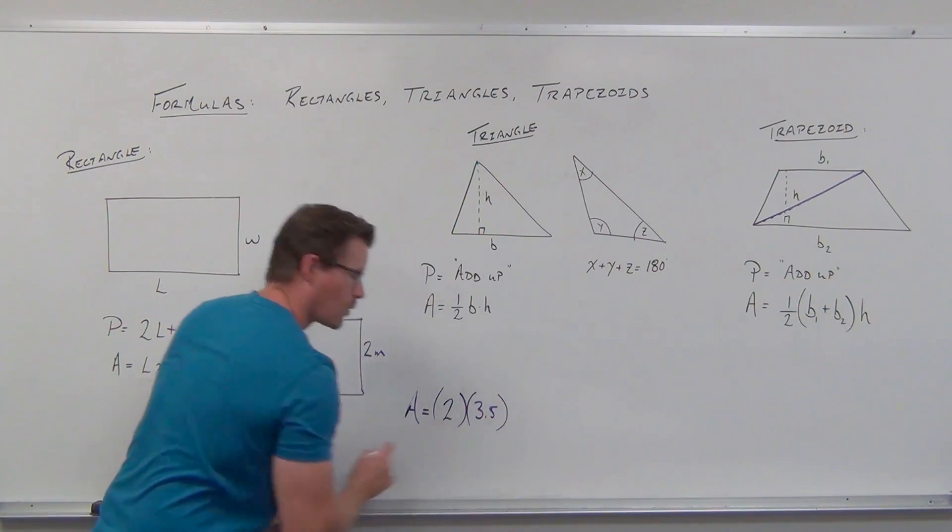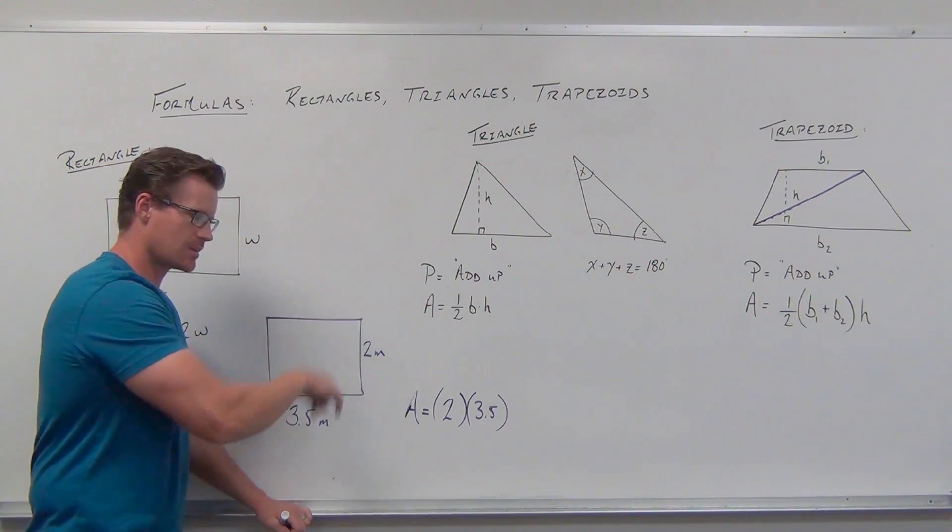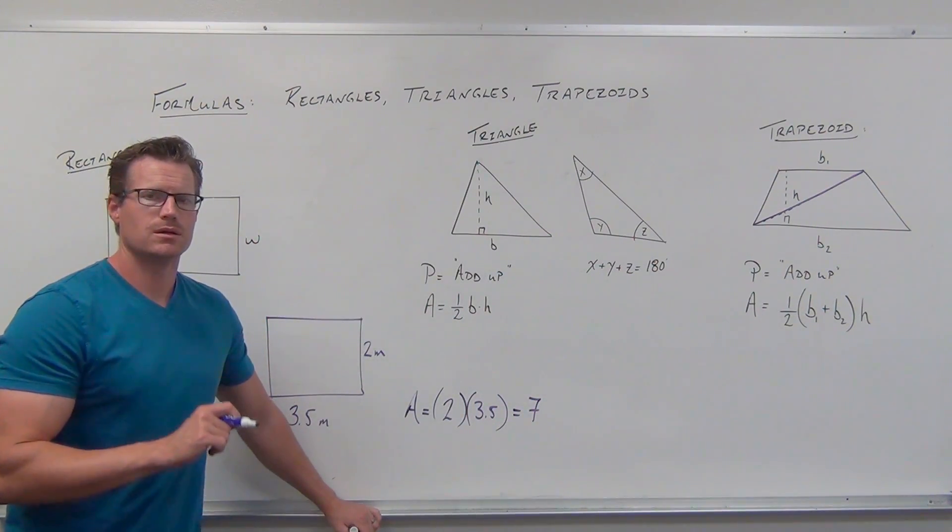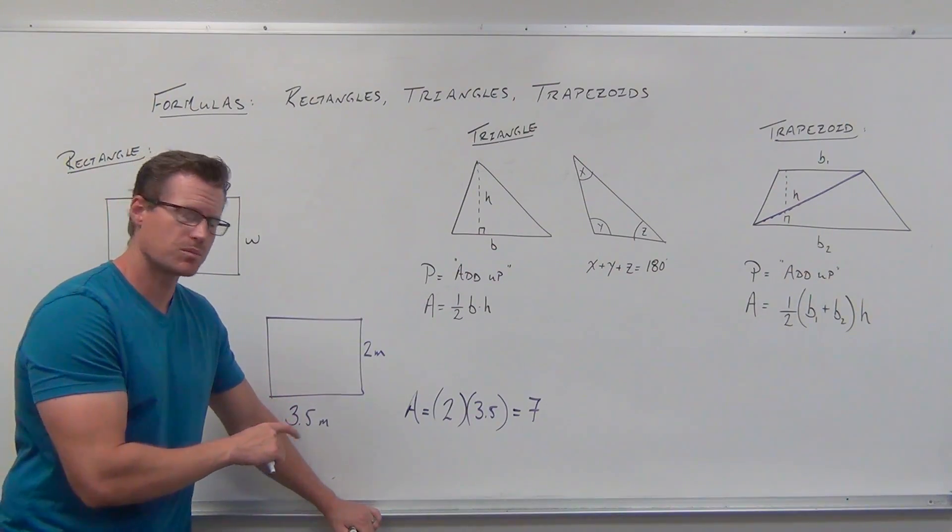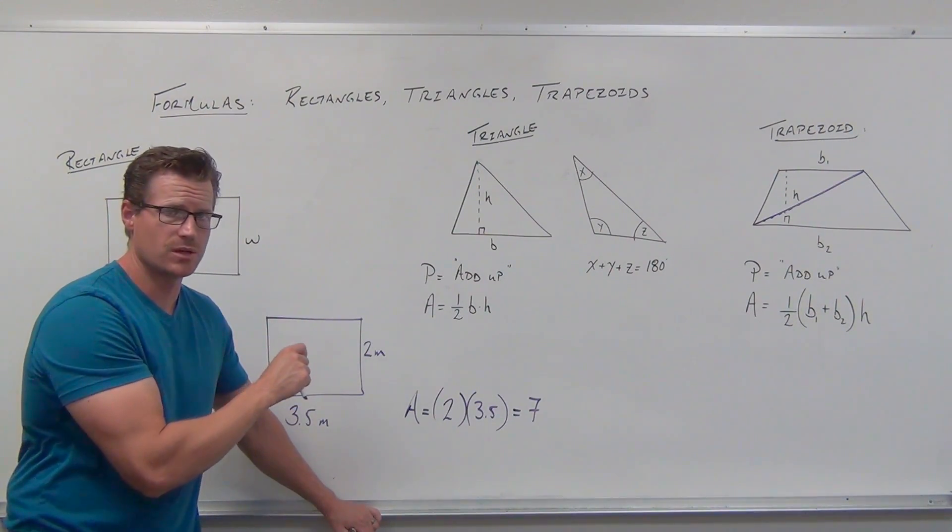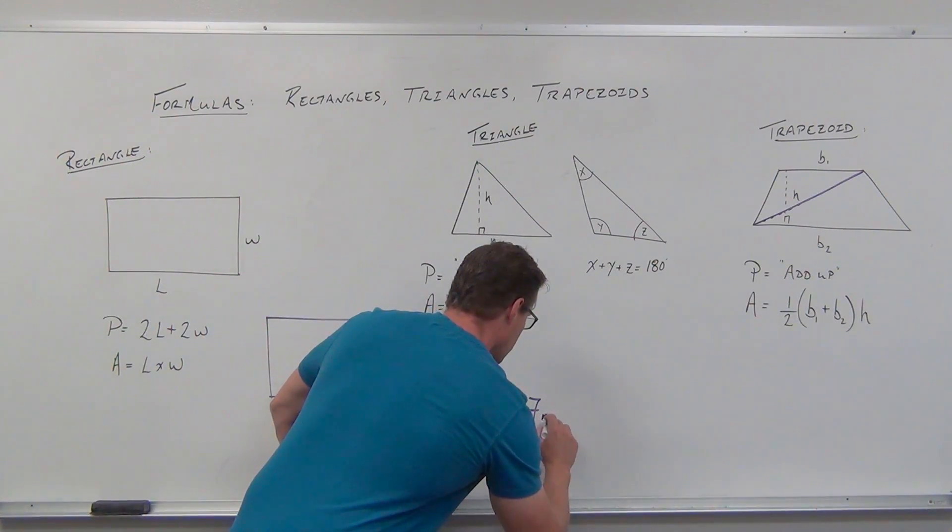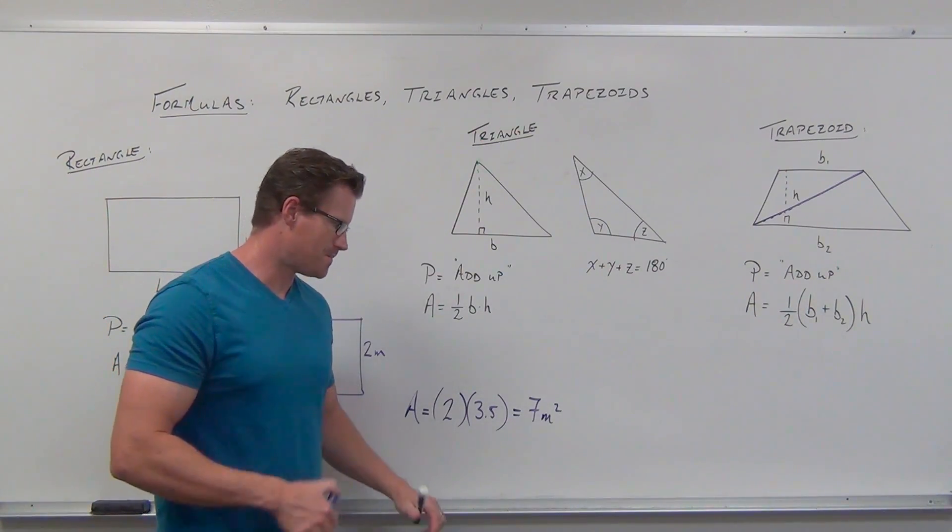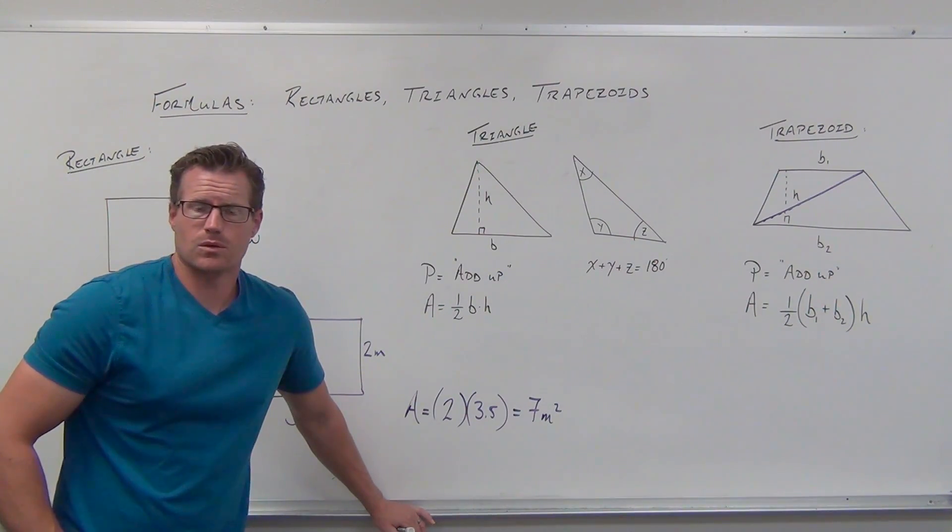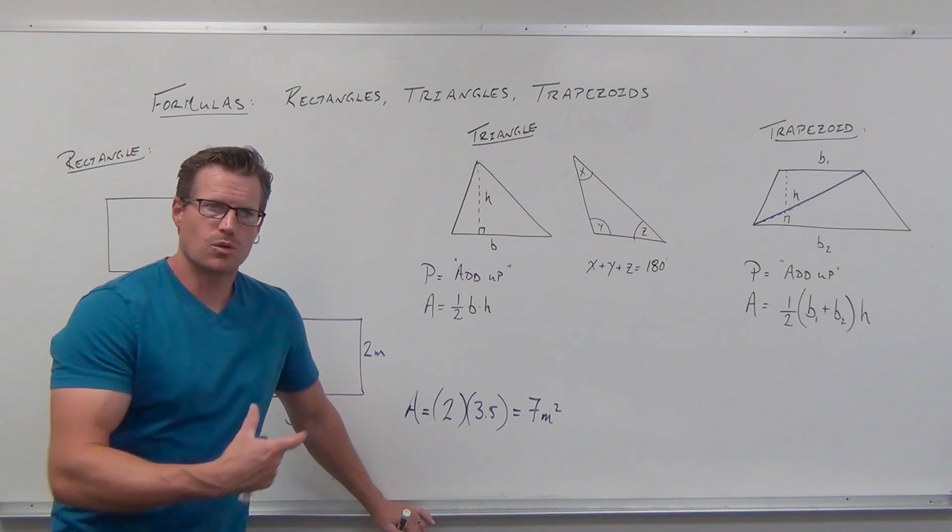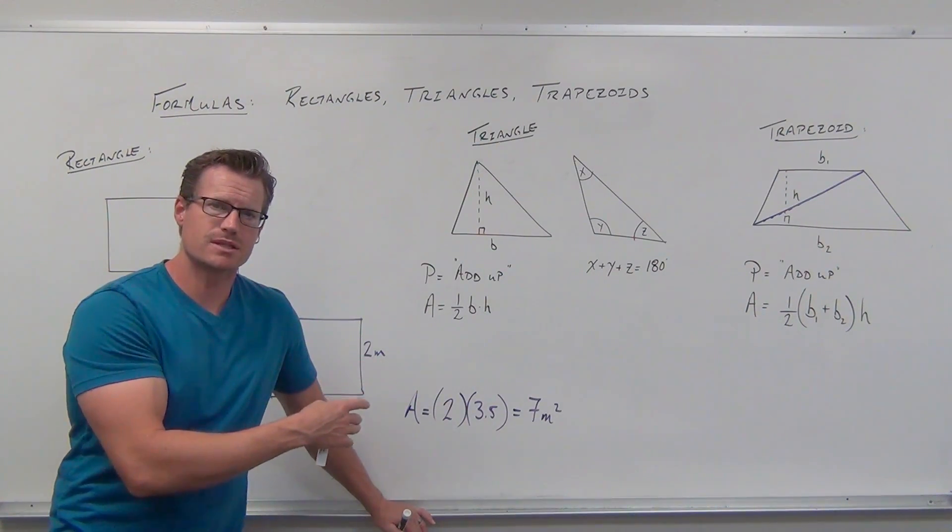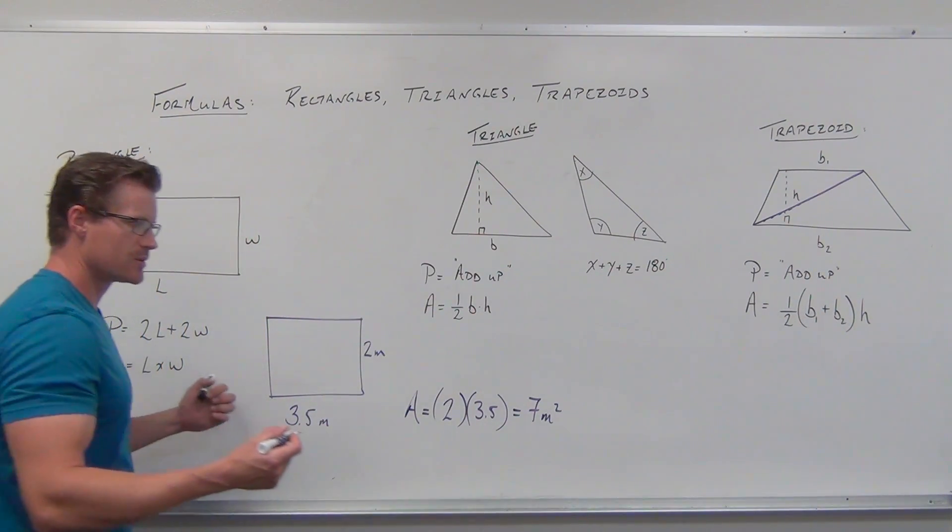Carpet is an area idea - how much carpet in square meters. Area equals length times width. Because multiplication is commutative, the order doesn't matter. 3.5 times 2 equals 7. Use correct units: you're multiplying meters times meters, giving square meters. You can't go to Home Depot and say 'I want three feet of carpet' - that doesn't make sense. You need square feet or square yards. So we need 7 square meters of carpet.